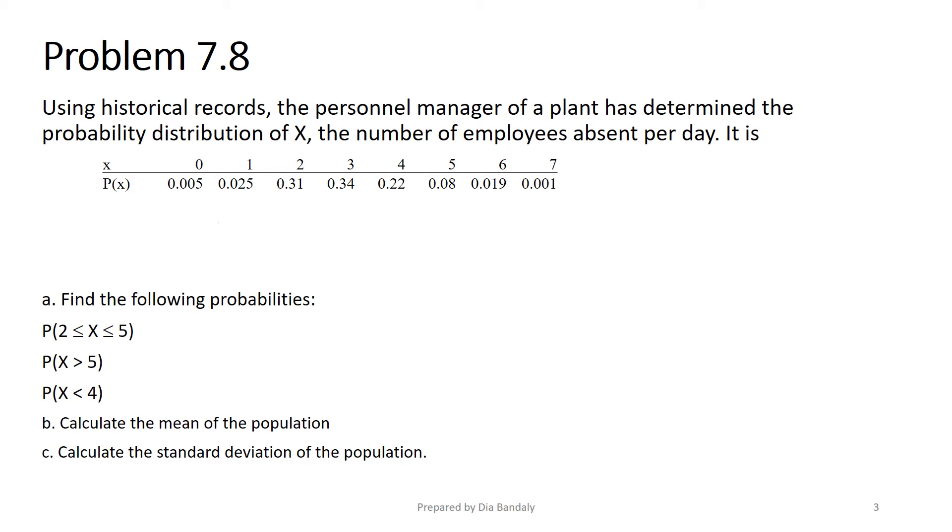In this problem, we're going to do something similar to problem 7.7, but we're going to go some further steps where we determine the mean and variance from the probability distribution of X. Here, X is the number of employees absent per day. Remember, it's very important to define your variable. These are the possible values of X and their probabilities. The first part asks us to find the following probabilities.